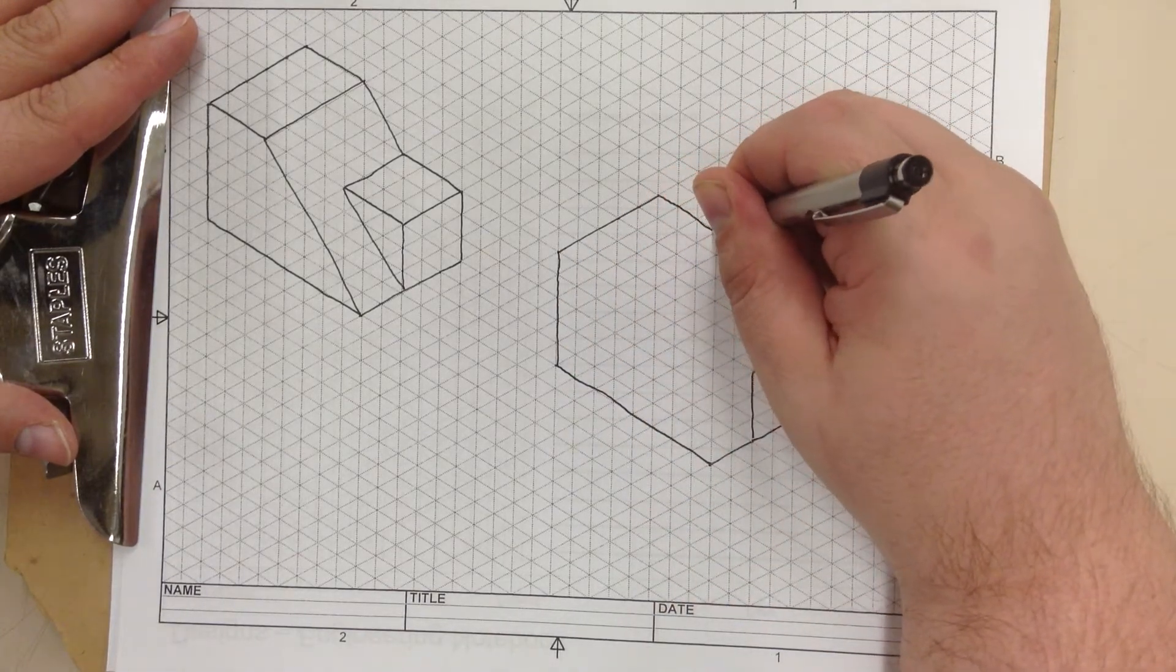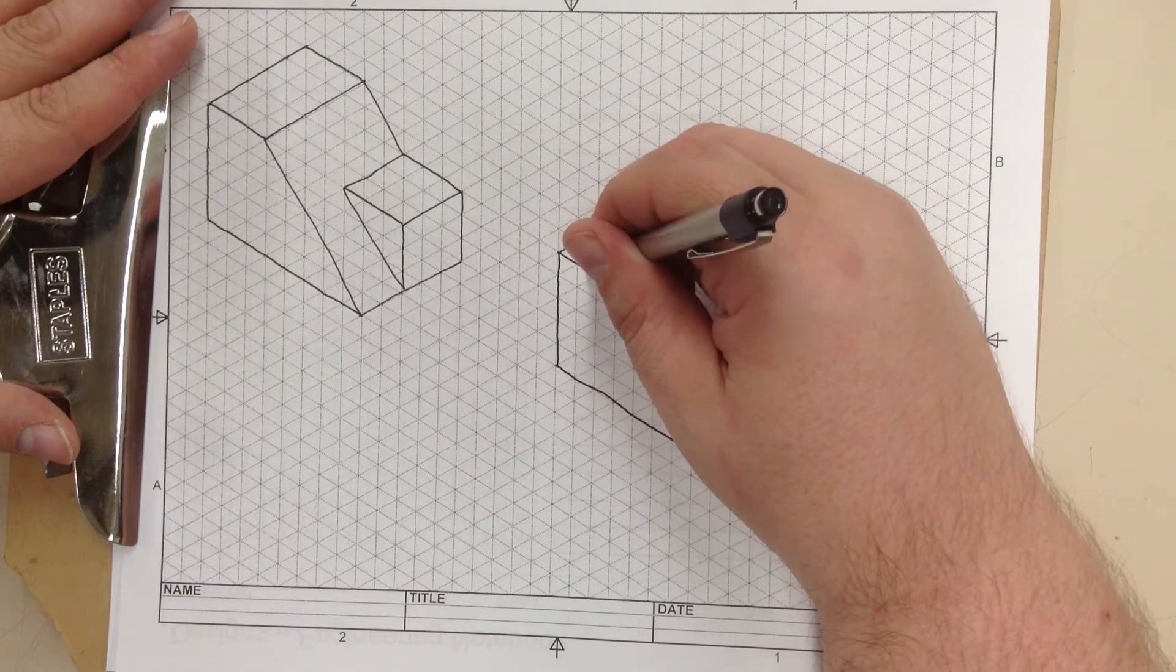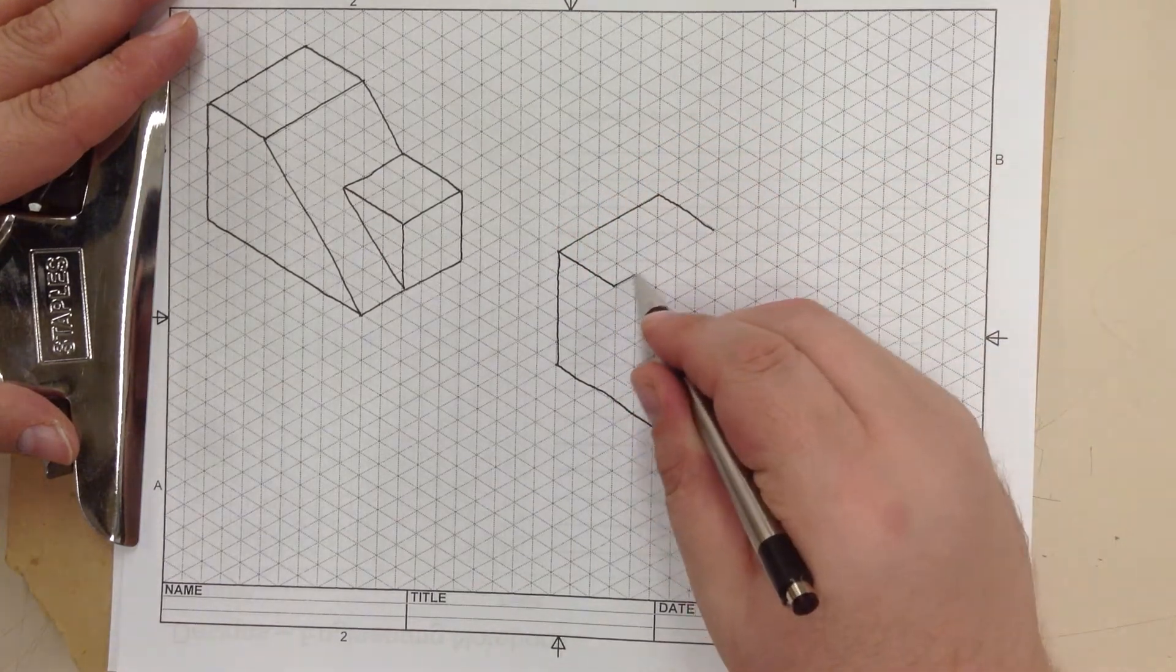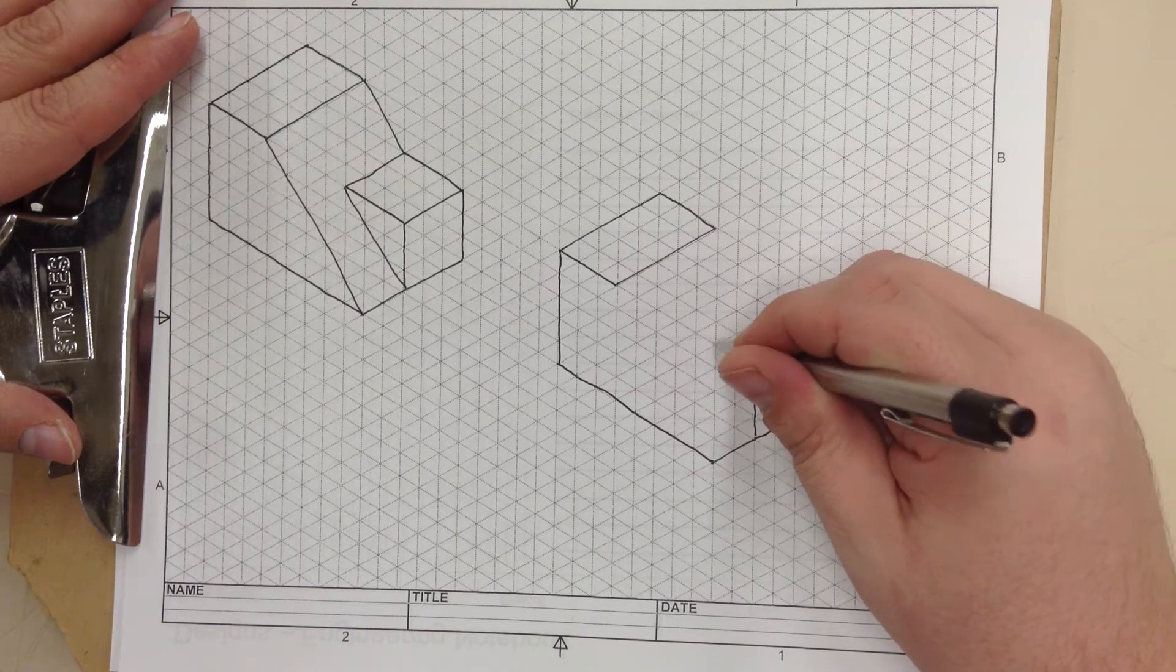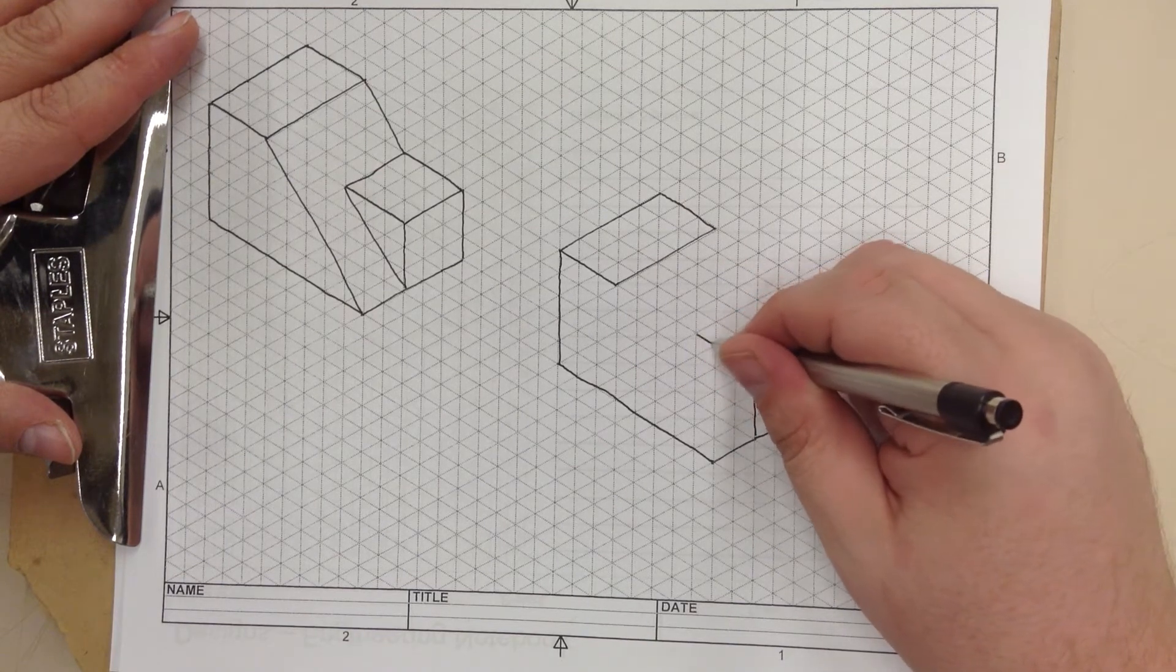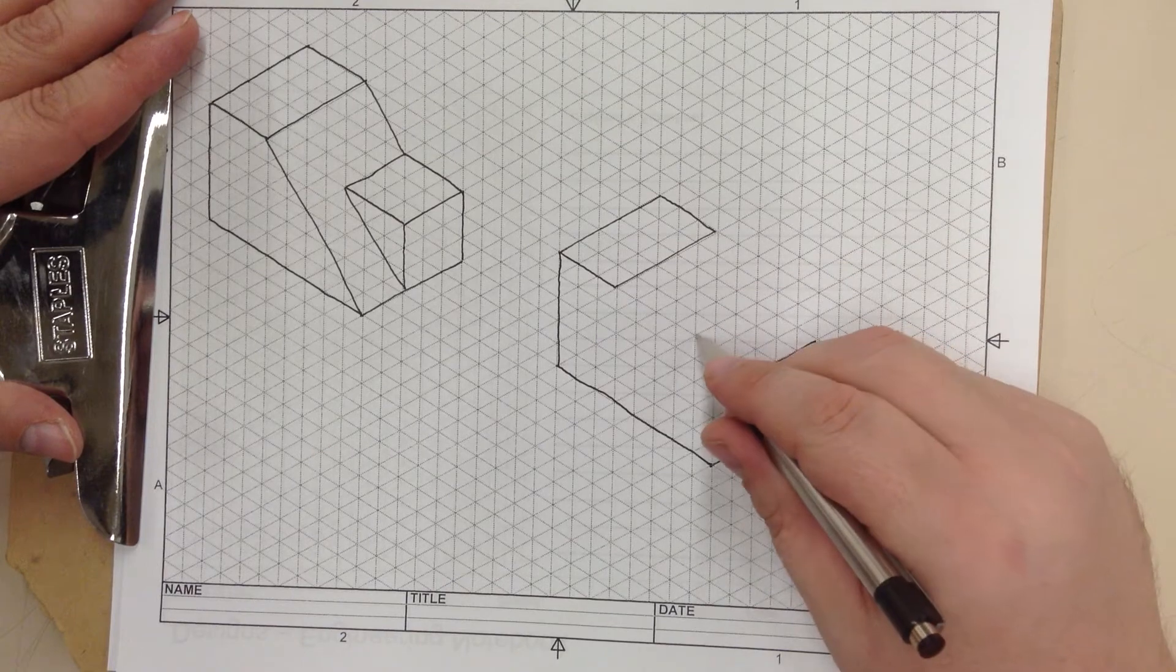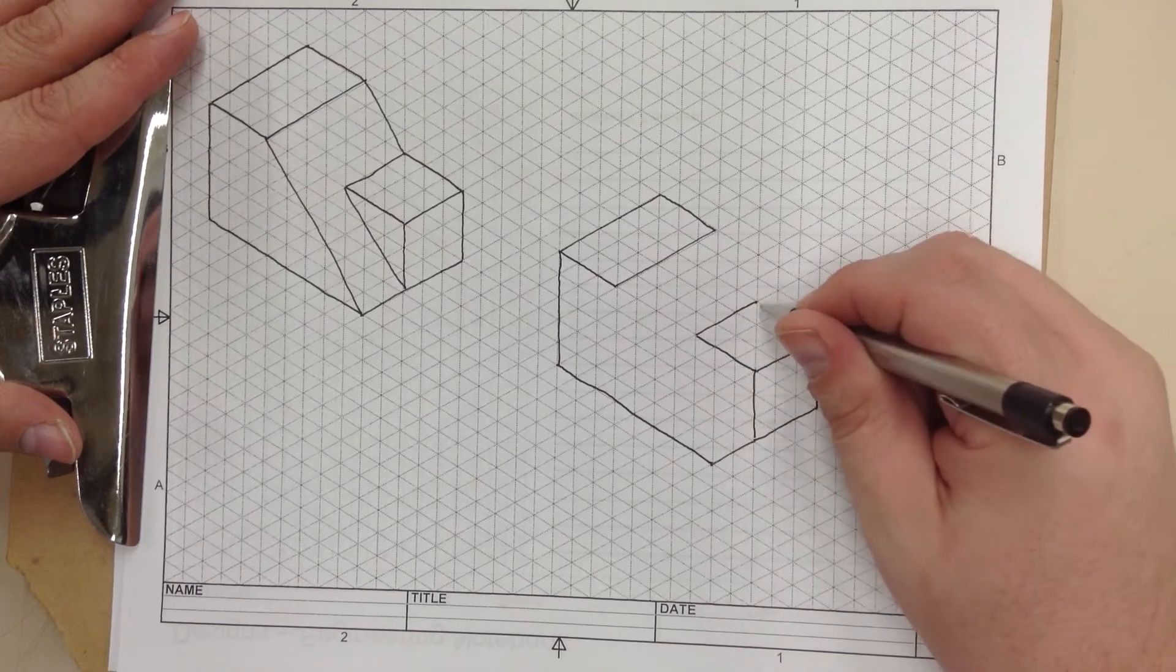3 this way, 3 this way, close it. Now we've got 1, 2, 3, 3 over, close the shape.